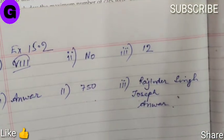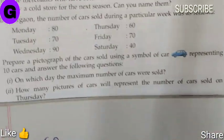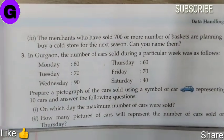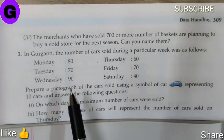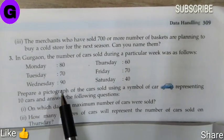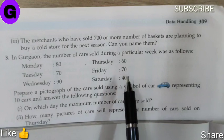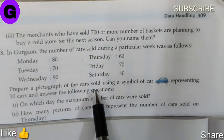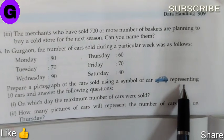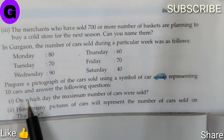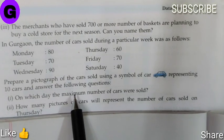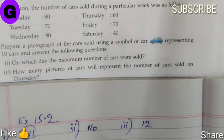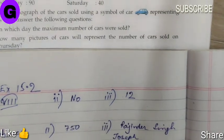Question number 3: In Gurgaon the number of cars sold during a particular week are as follows: Monday 80, Tuesday 70, Wednesday 90, Thursday 60, Friday 70, Saturday 40. We have to prepare a pictograph of the cars sold using the symbol of a car representing 10 cars, and then answer the following questions.